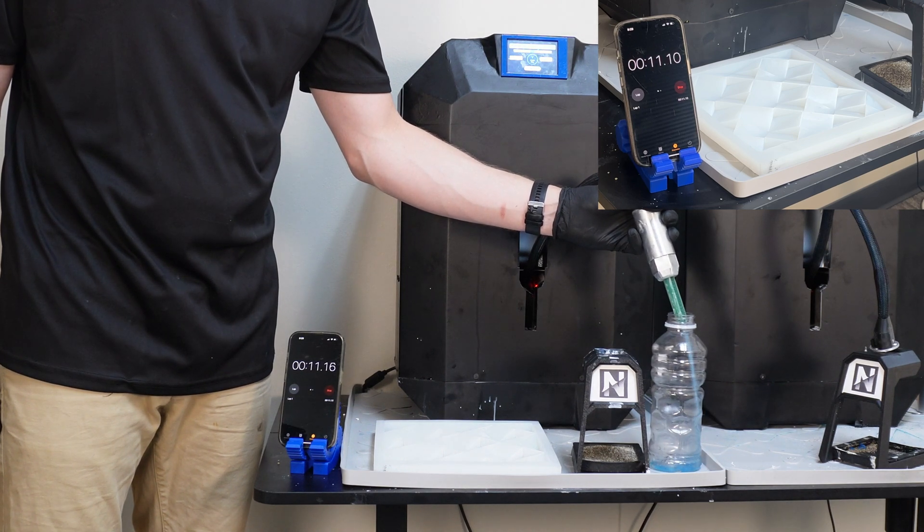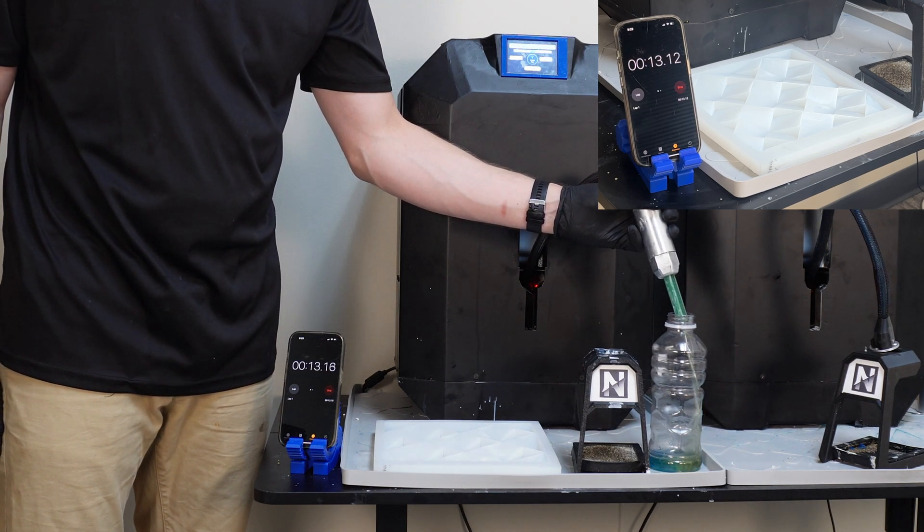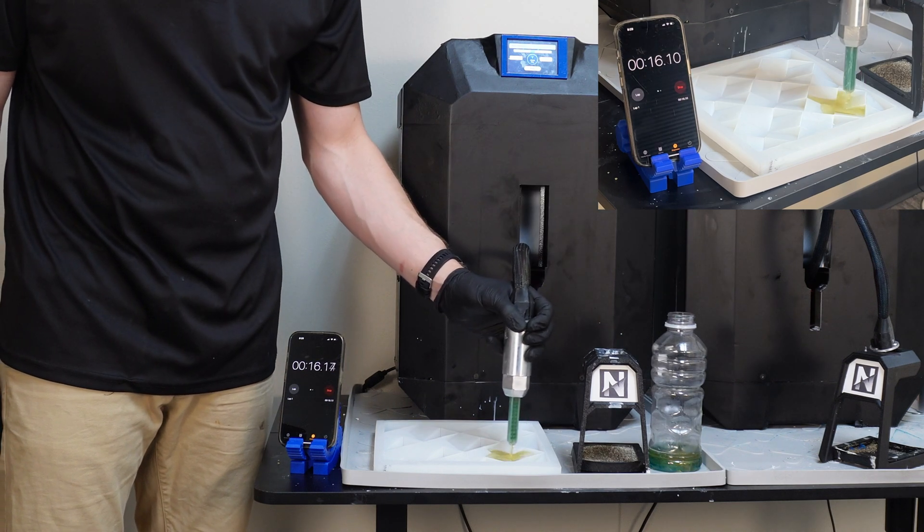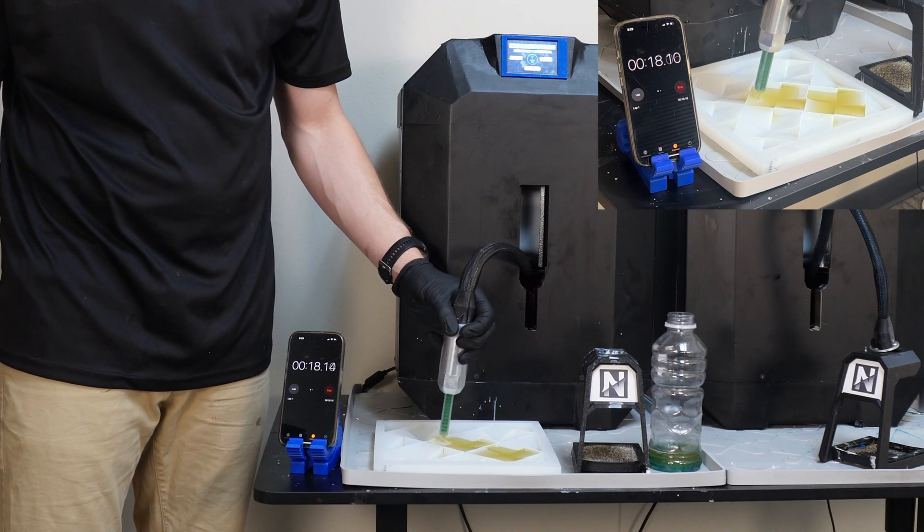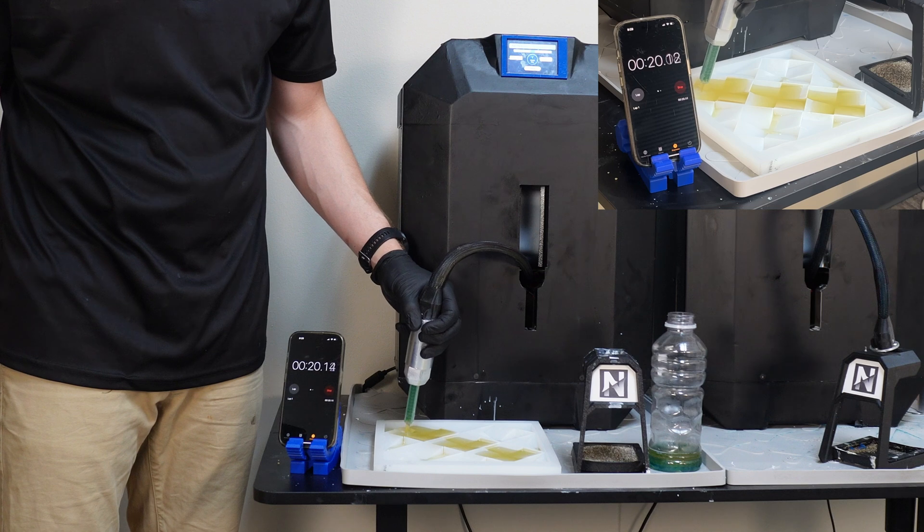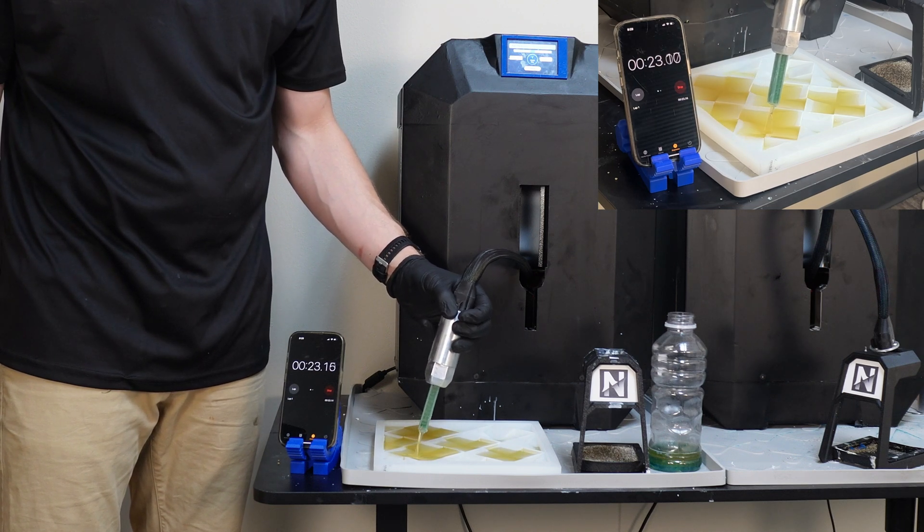In less than 3 minutes, I'm going to have a part that would take a 3D printer 10 hours to print. The part will be more durable and cheaper to manufacture, and the silicone mold is immediately reusable. You can create multiple parts in the time it would take a normal 3D printer to calibrate.